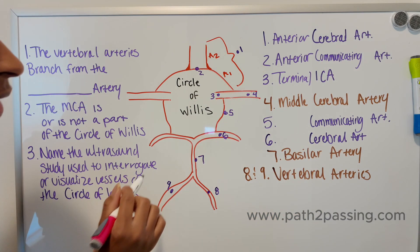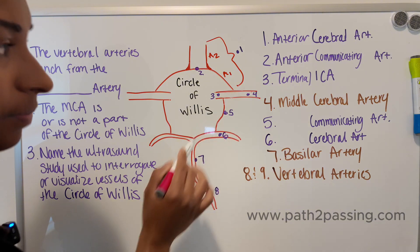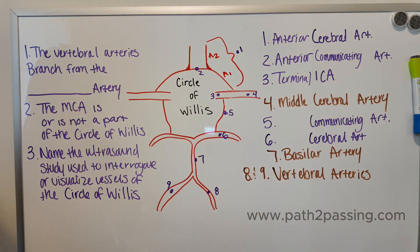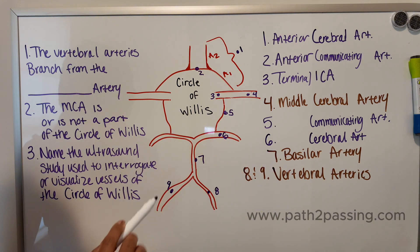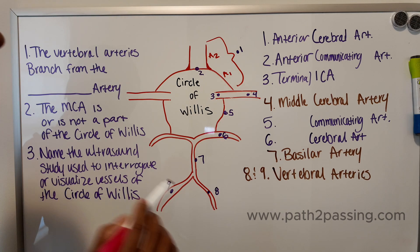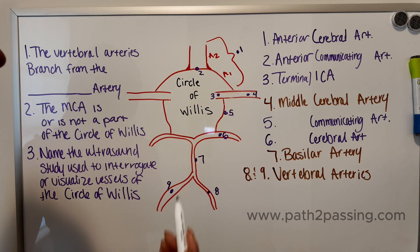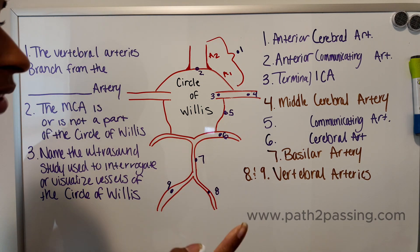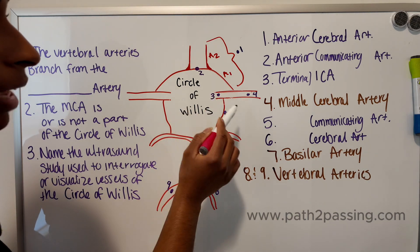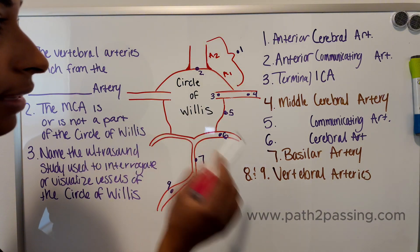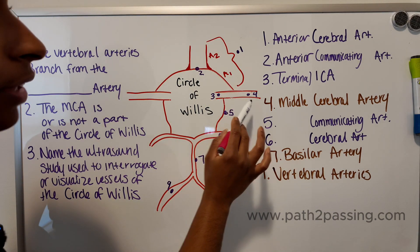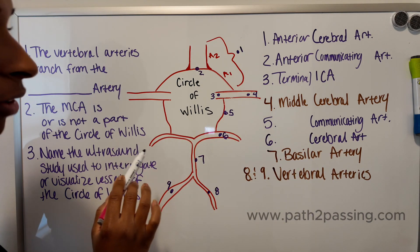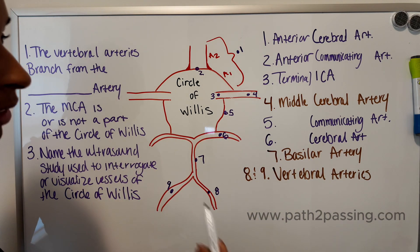Vessel four — I went ahead and labeled that already — it is your middle cerebral artery. When it comes to the ARDMS exams, they ask whether the middle cerebral artery is a part of the circle of Willis, and the answer is that it is not. The reason is that the circle of Willis forms after the right and left ICAs enter the cranium to create it. So vessel four, the MCA, is not a part of the circle of Willis per the ARDMS exams.